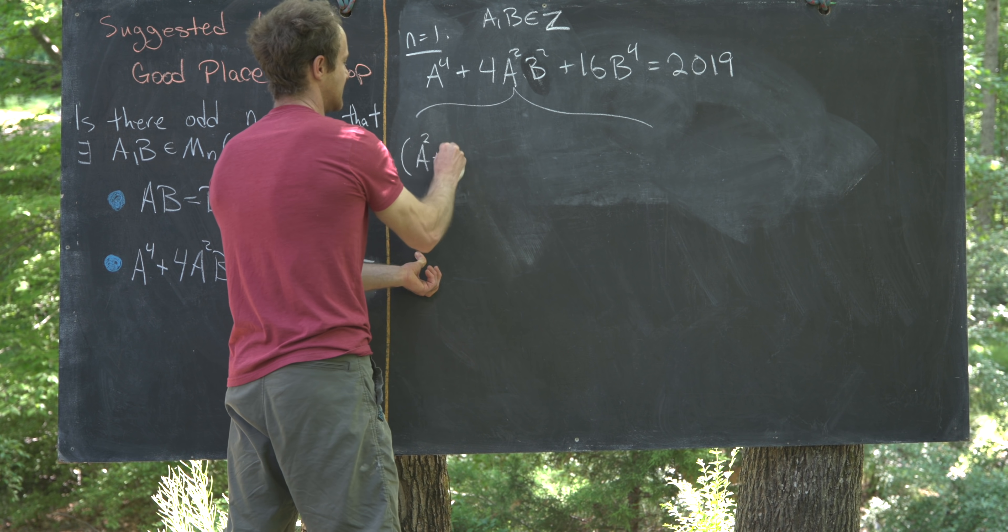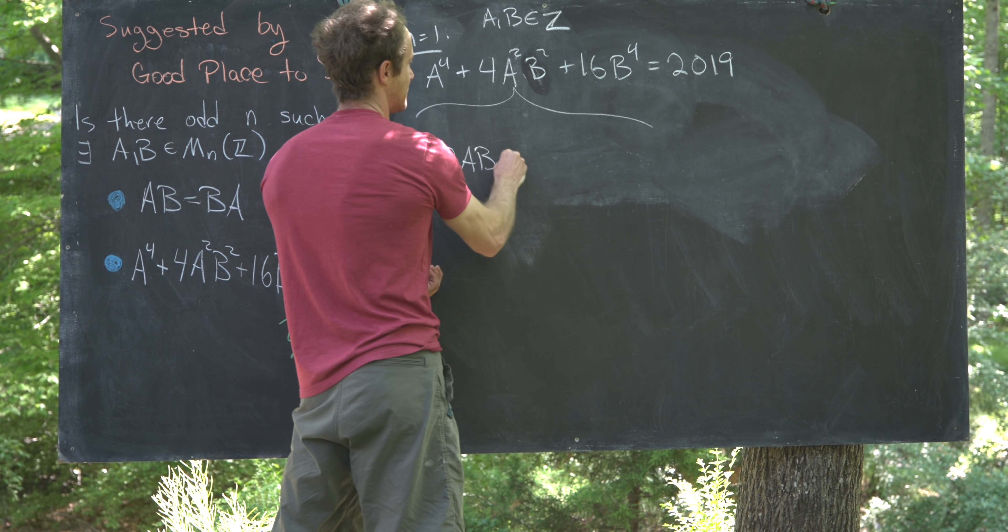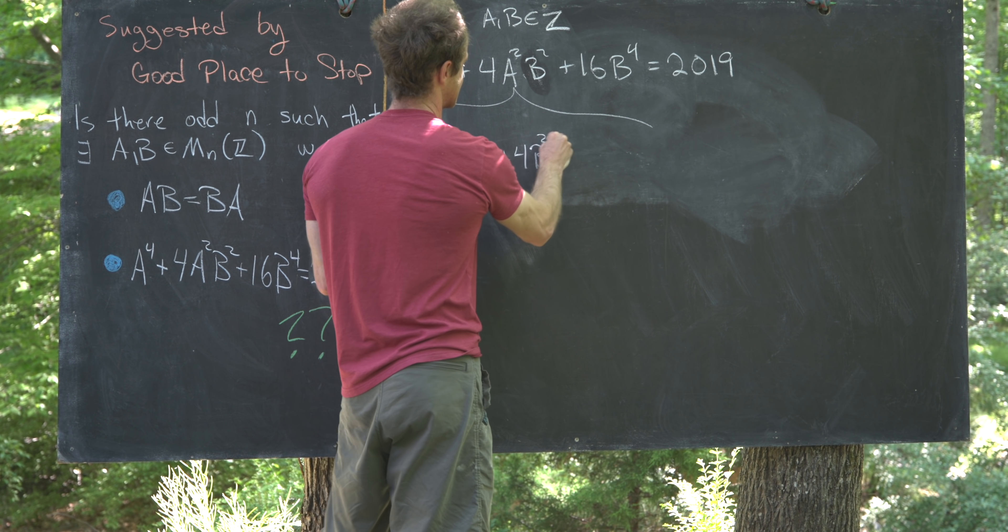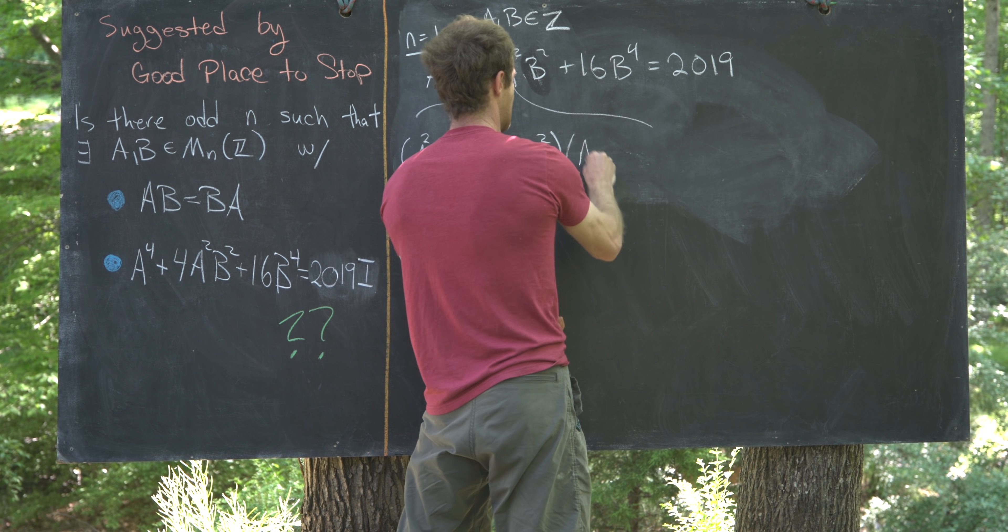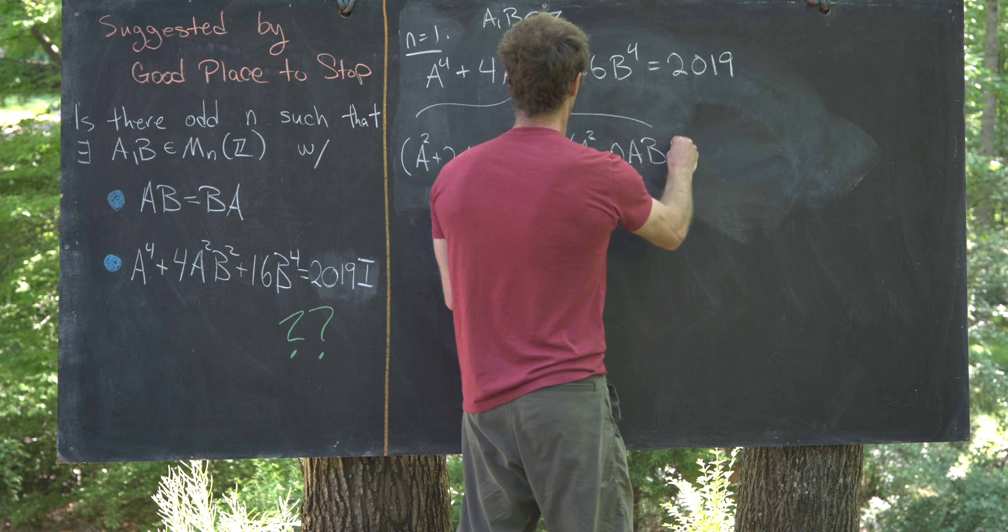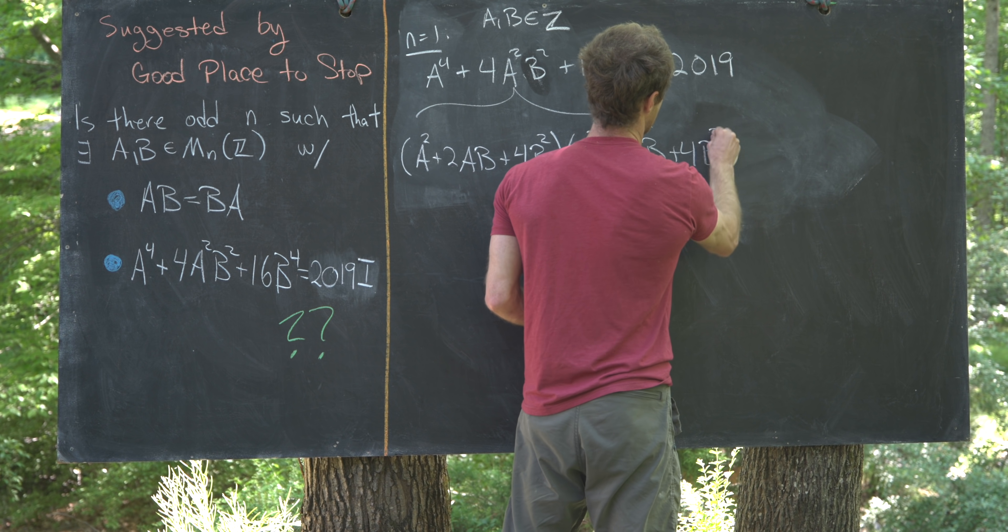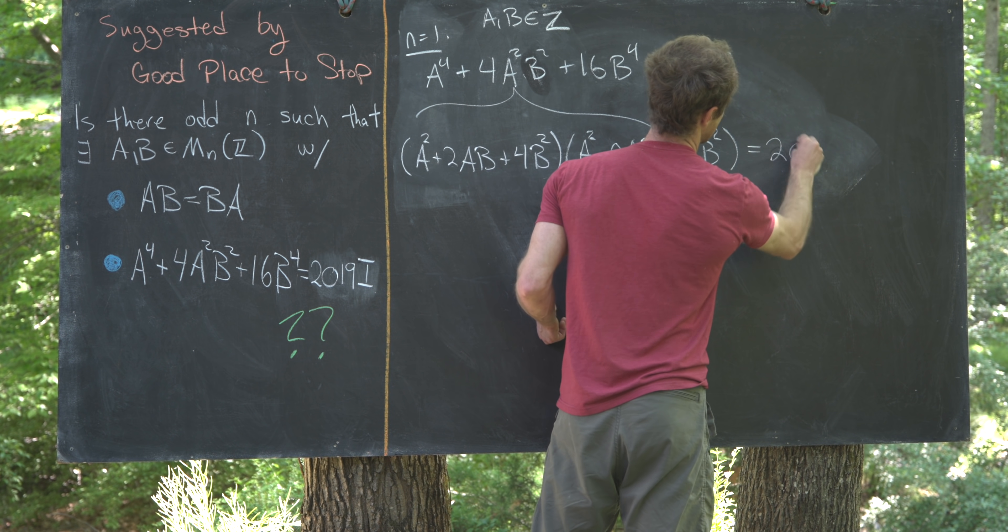So we've got a squared plus 2ab plus 4b squared, and then a squared minus 2ab plus 4b squared, and then we have this is equal to 2019.